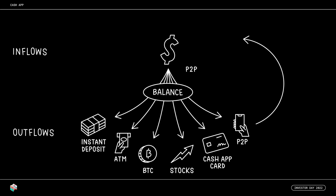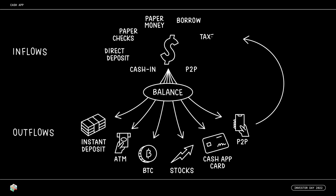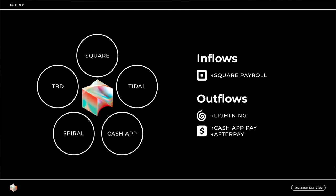But money doesn't only flow into the system through peer-to-peer. Customers can provide their ACH and routing number to their employer and receive a direct deposit for their paycheck, deposit paper checks, visit a retail location like Walgreens to deposit paper money, take out a loan through Cash App Borrow, receive their tax refund, and deposit Bitcoin by receiving it from an external wallet across the blockchain. These inflows and outflows can also create connections across Block and reinforce the product within the ecosystem of ecosystems.